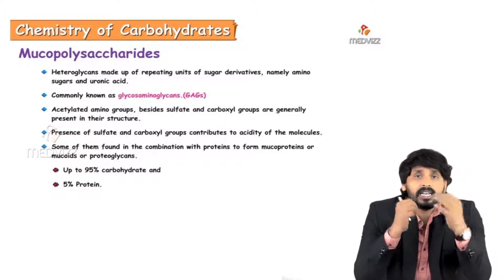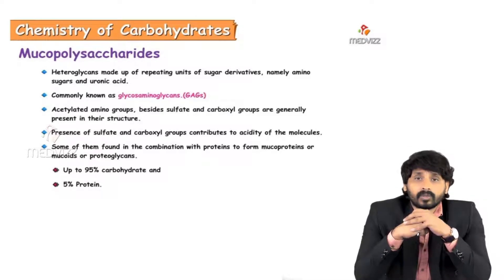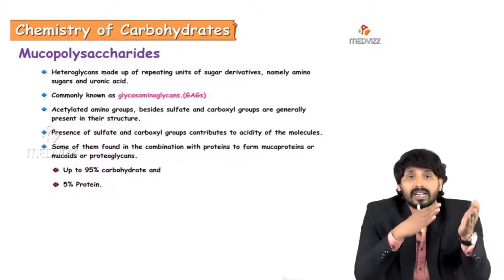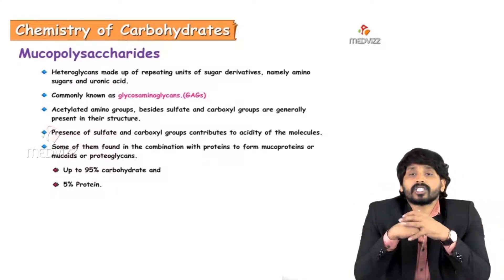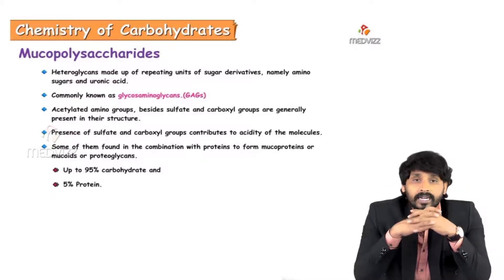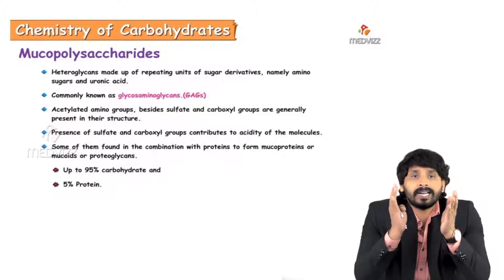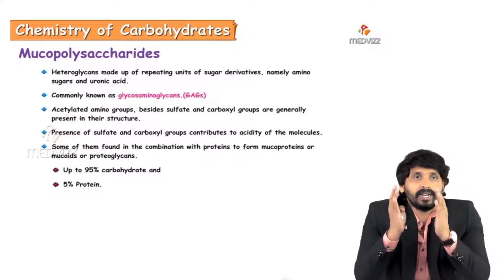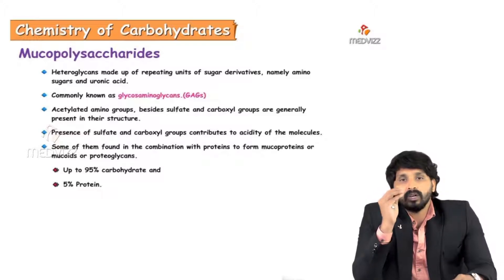These amino groups may be acetylated or sulfated, and sometimes carboxyl groups are attached in the structure. The attachment of sulfate and carboxyl groups adds to the acidity of the molecules and they are charged. Some of them are found in combination with proteins, forming mucoproteins, mucoids, or proteoglycans — which are of greater importance in the clinical context. In proteoglycans, although protein comes first in the name, its concentration is limited compared to carbohydrates.